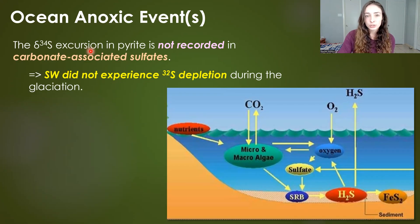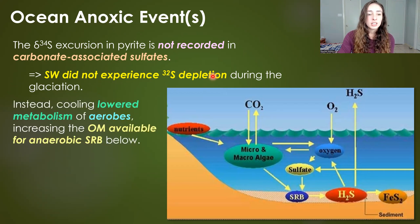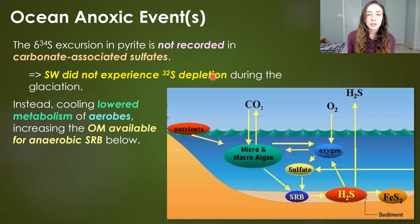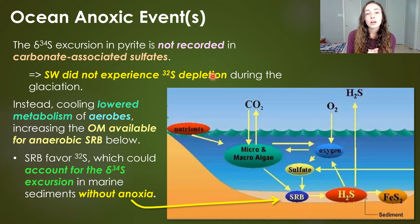So how can we explain the sulfur isotope excursion without anoxic conditions? This excursion is actually not recorded in carbonate-associated sulfates, just in pyrite, so seawater probably did not experience a general light sulfur isotope depletion during this glaciation. Instead, cooling likely lowered the metabolism of aerobic bacteria, which therefore increased the organic matter available for anaerobic sulfate-reducing bacteria. Sulfate-reducing bacteria take up more light sulfur than heavy, and that could account for the sulfur isotope excursion without invoking marine anoxia.